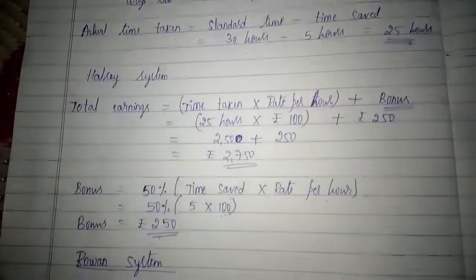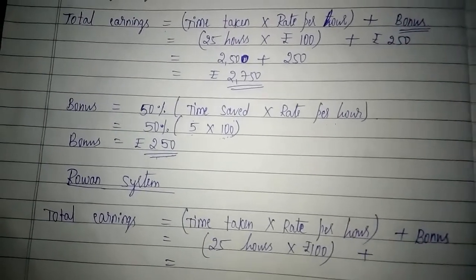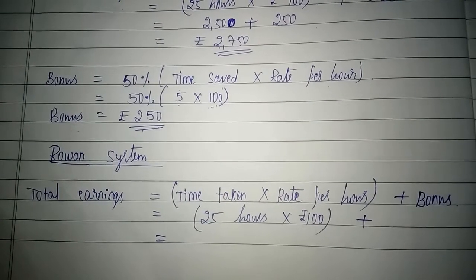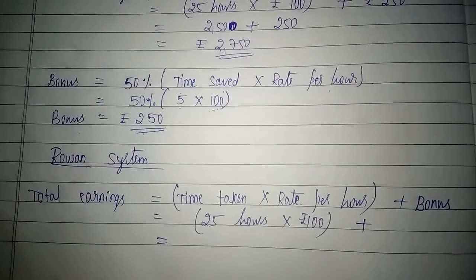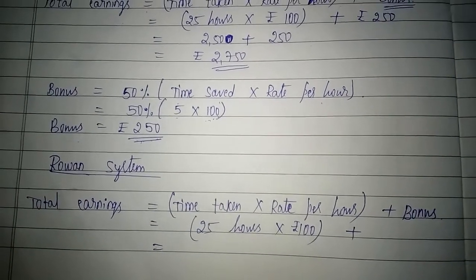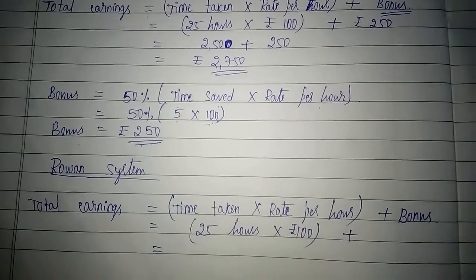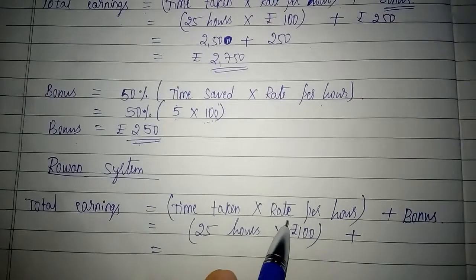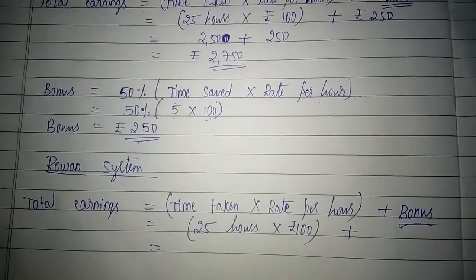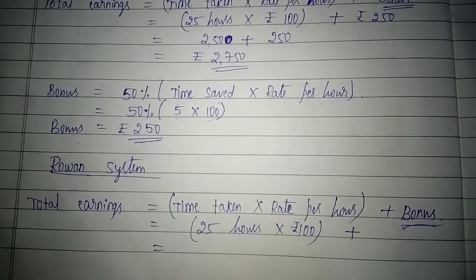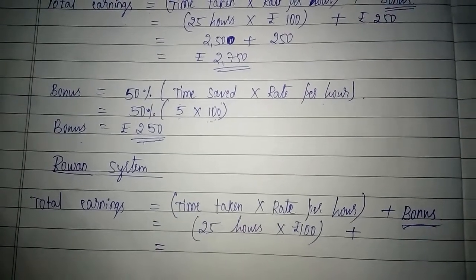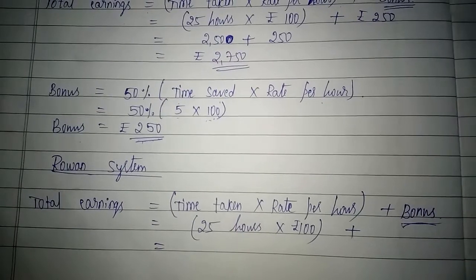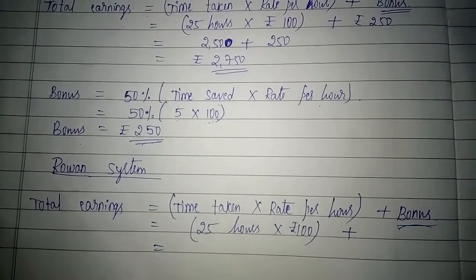After calculating the earnings under the Halsey system, now let us calculate the earnings of the worker under Rowan system. The formula to calculate total earnings under Rowan system is similar — it is the same as Halsey plan: total earnings = time taken × rate per hour + bonus. But the difference between the Halsey system and Rowan system lies in the bonus calculation.